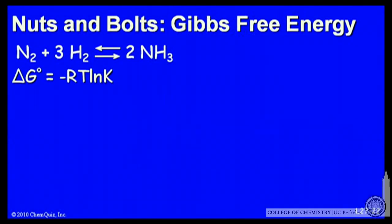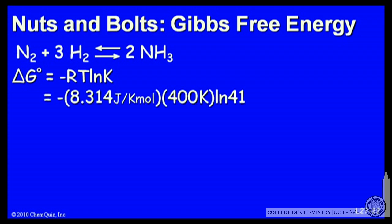I can calculate delta G standard from minus RTlnK. I was given K and the temperature. So here's R, the gas constant, T, the temperature 400K, and the equilibrium constant at 400K. So that free energy standard state difference is minus 12.3 kilojoules per mole.